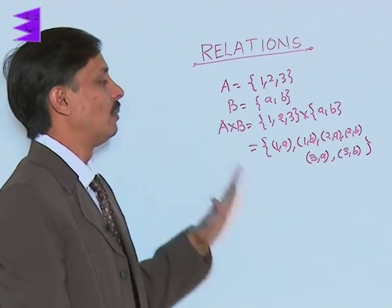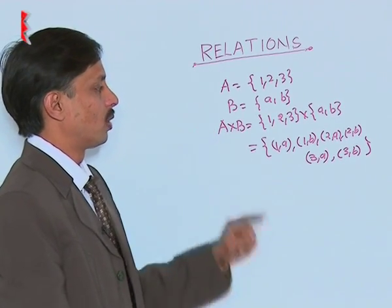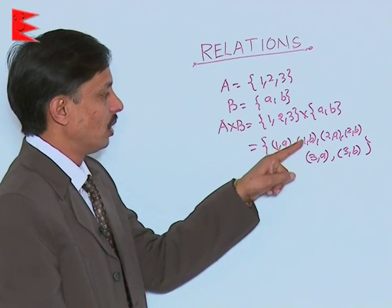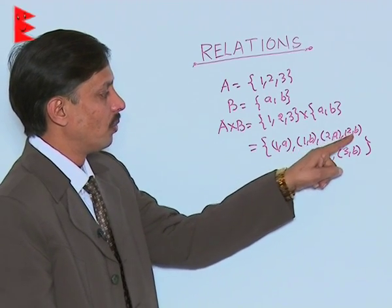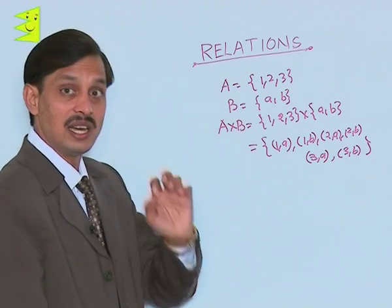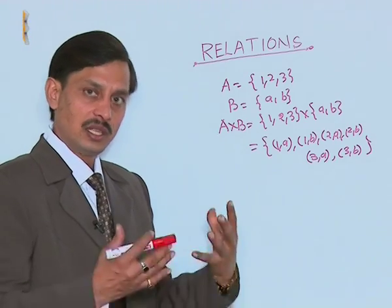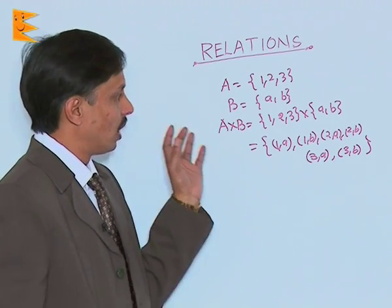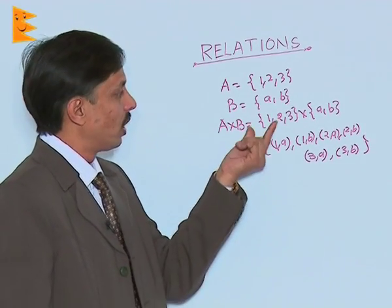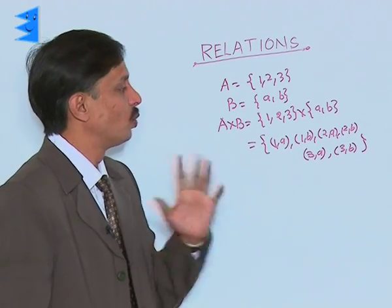And total number of elements present in the cross product of A cross B is 1, 2, 3, 4, 5, 6. So, A cross B is nothing, is just the calculation in the form of proper order of elements of the two sets.